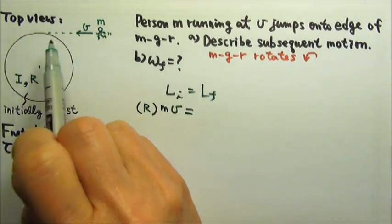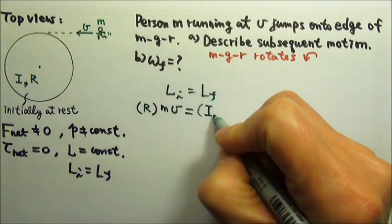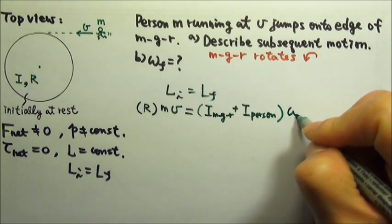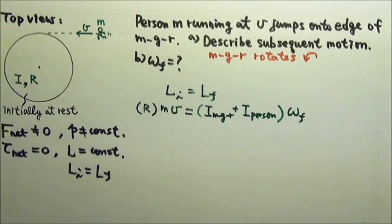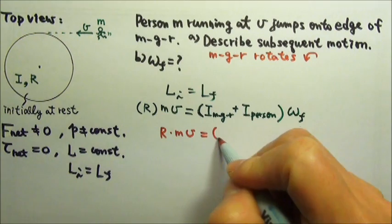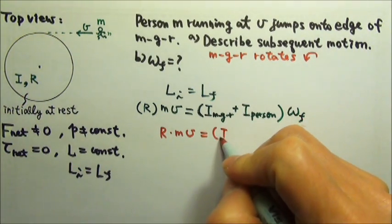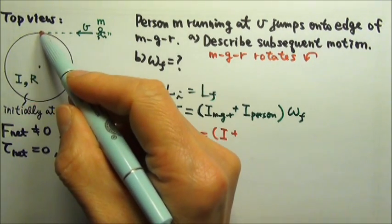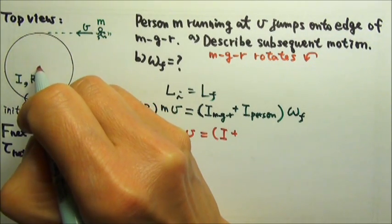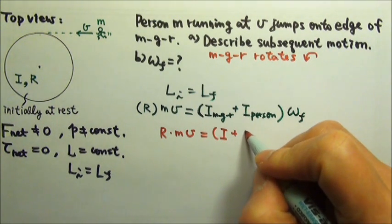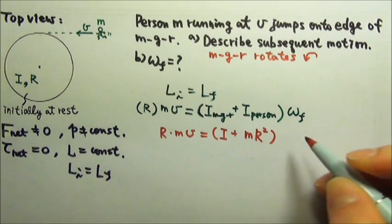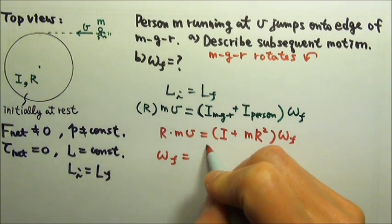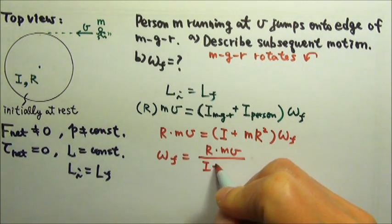At the end, they stick together, so we have the rotational inertia of the merry-go-round plus the rotational inertia of the person, and they rotate together at the same final angular velocity. So we have R times MV equals the rotational inertia of the merry-go-round, I, plus the person's rotational inertia as a point mass, MR², times omega. Dividing both sides, the final angular velocity is RMV divided by (I + MR²).